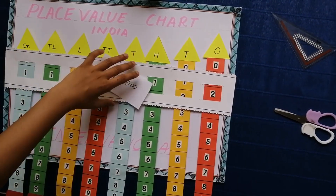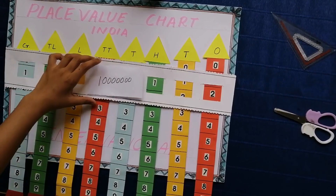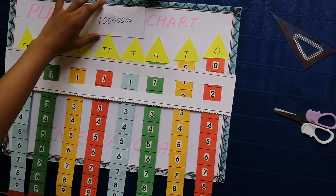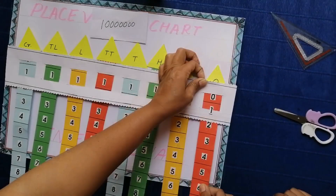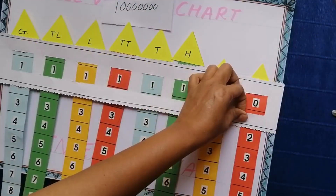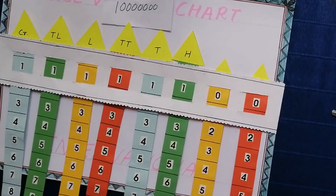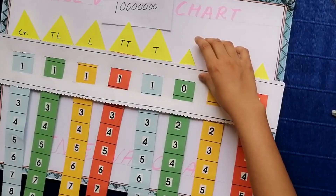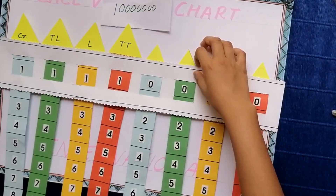Now let's see how this model works. Take a number and scroll according to the place value of the number. Hope you like this video — if you do, please like and comment your suggestions in the comment box. Thank you.